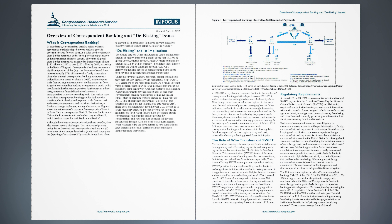The U.S. sanctions regime can also affect correspondent banking. Title III of the 2001 USA Patriot Act, P.L. 107-56, to a degree extends the obligation to comply with sanctions lists of the Office of Foreign Assets Control to some foreign banks, particularly through correspondent banking relationships with U.S. banks, thereby increasing the reach of U.S. regulation. Under Section 311 of the USA Patriot Act, FinCEN is authorized to impose special measures on U.S. financial institutions to mitigate money laundering threats associated with foreign jurisdictions or institutions found to be of primary money laundering concern.